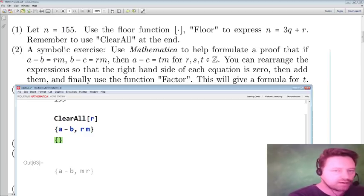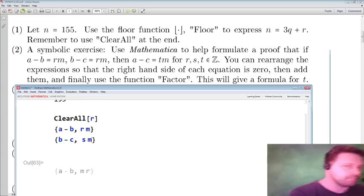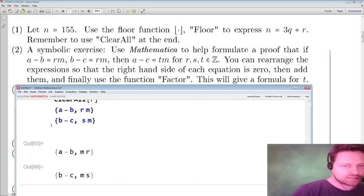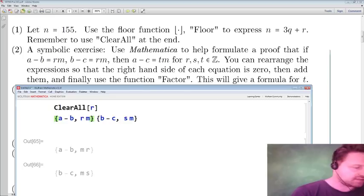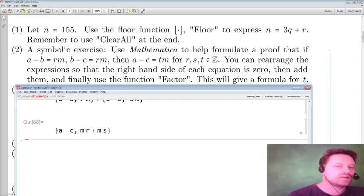Alright, so next I'll enter the other equation. So I'm just entering a pair, really. I'm thinking of it as an equation but I'm entering a pair: b minus c. Now I've got a typo in this pdf file, really meant to say s times m. So I've entered two pairs and I'm thinking of these as equations. Now I'm going to add these pairs, see what we get. Well, I have a minus c on the left and on the right I have mr plus ms.